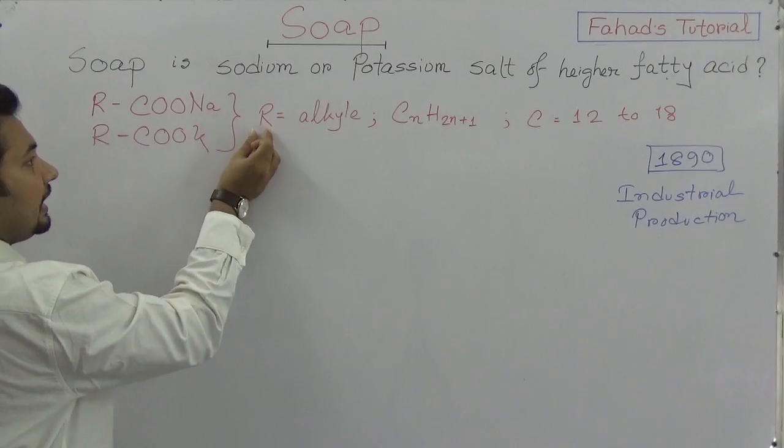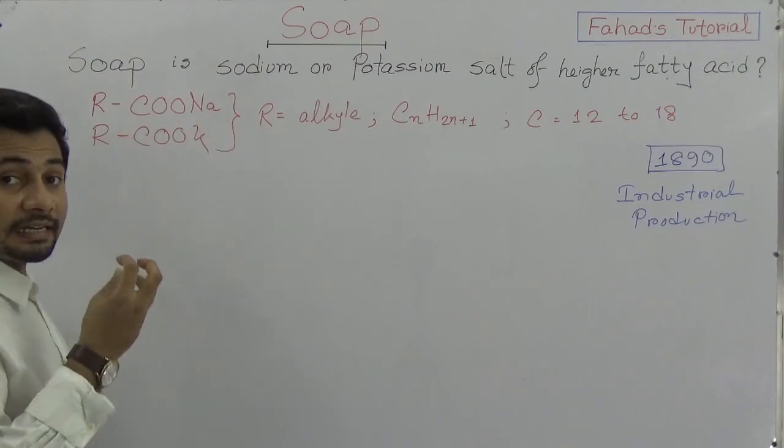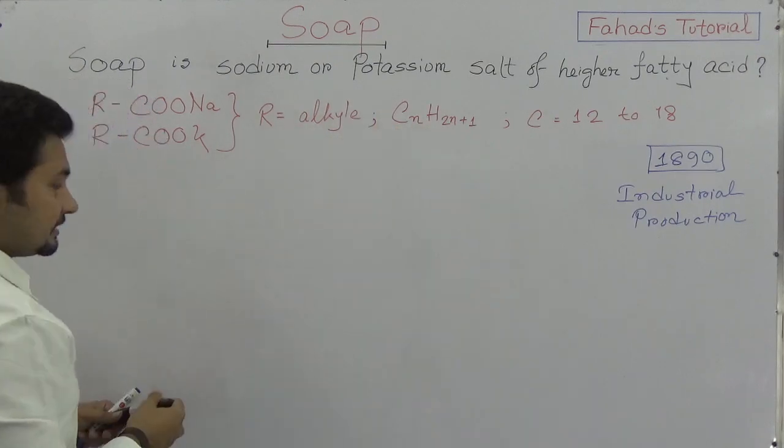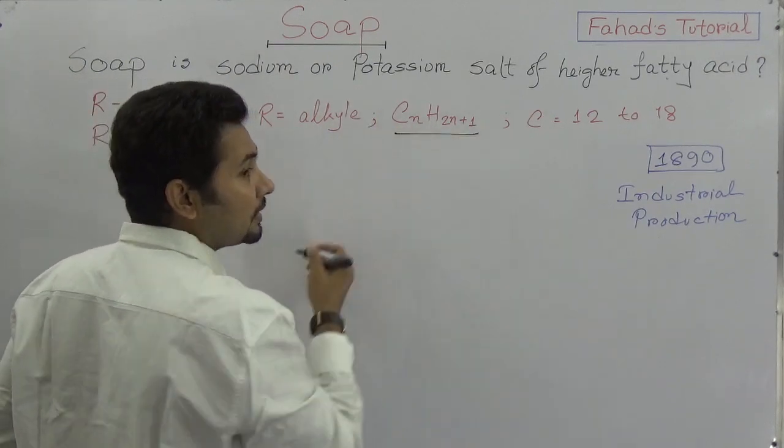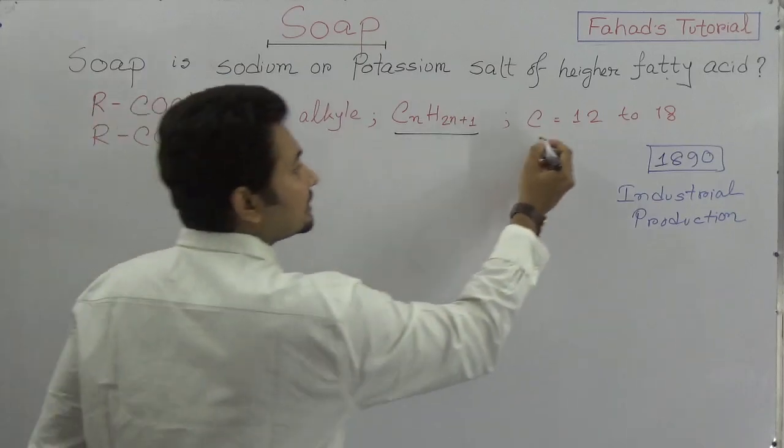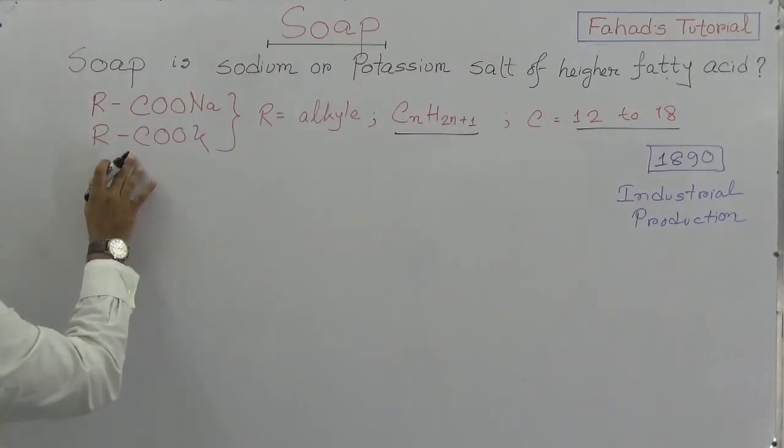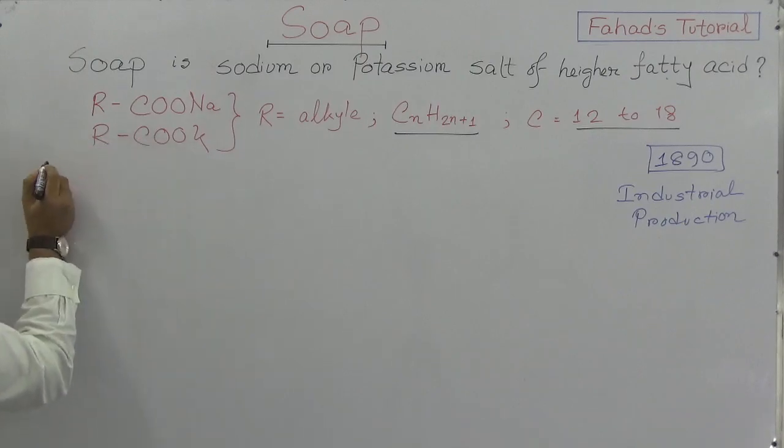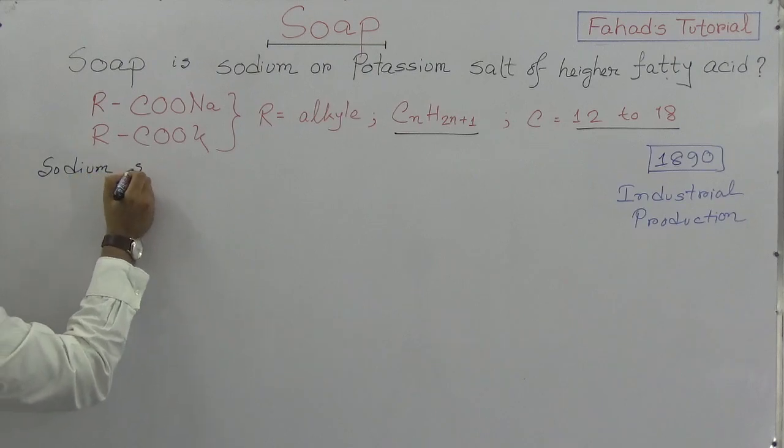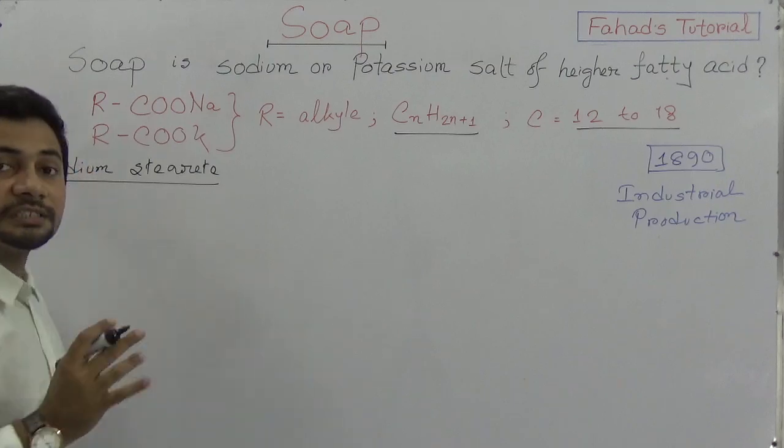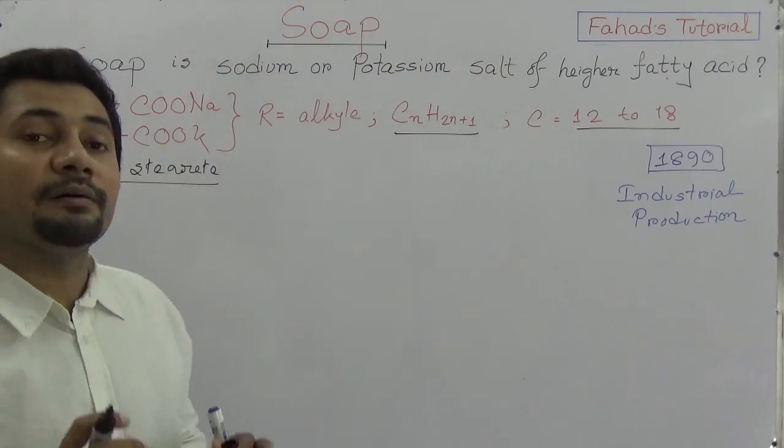This R is actually alkyl. The formula of alkyl is CnH2n+1, where the number of carbons is between 12 to 18. This is known as sodium stearate or potassium stearate, which is soap.